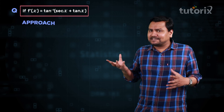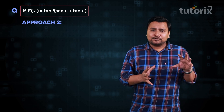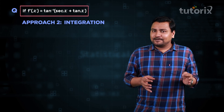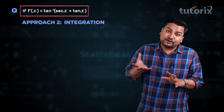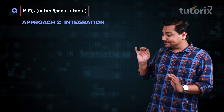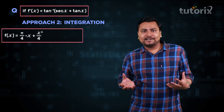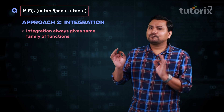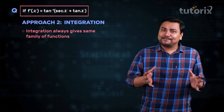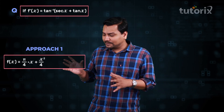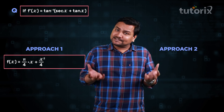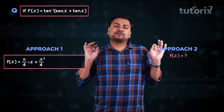Now let's move to the next approach to solve this integral — the integration approach. There we also have to take the help of inverse trigonometric functions, but the function f(x) we get there looks different from the answer we got here. Here it's just a quadratic function. We know integration always gives the same family of functions, so let's see approach 2 and decide whether a mistake was made in either approach.